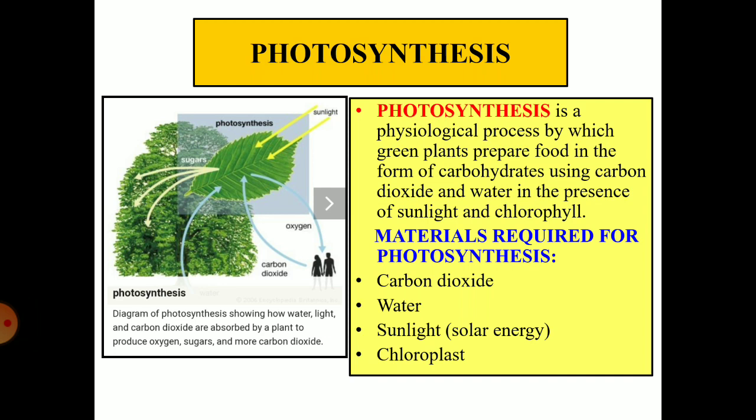What are the materials required for photosynthesis? Carbon dioxide and water are the raw materials, and sunlight and chloroplast are required for carrying out photosynthesis.